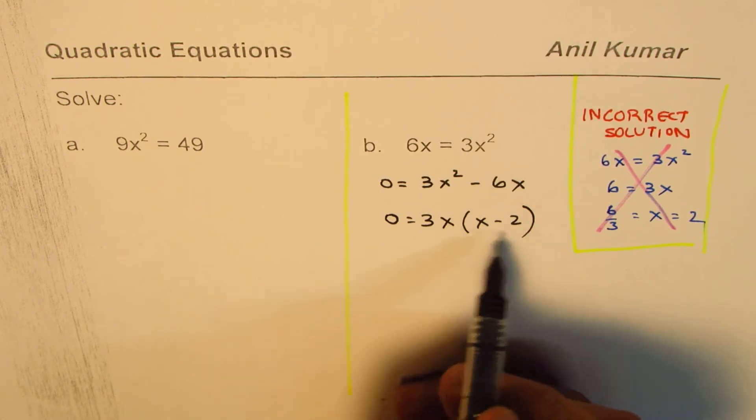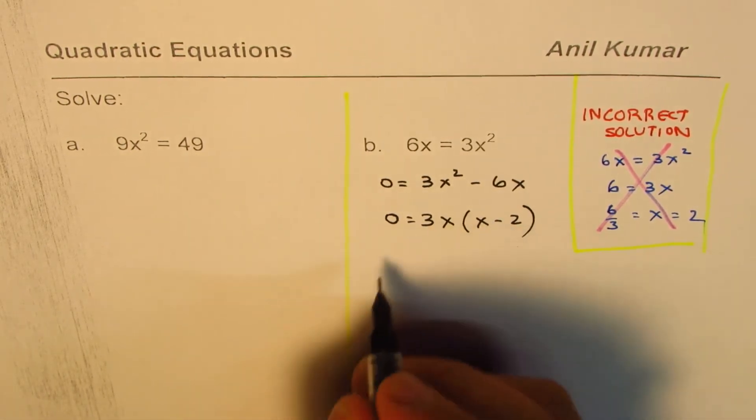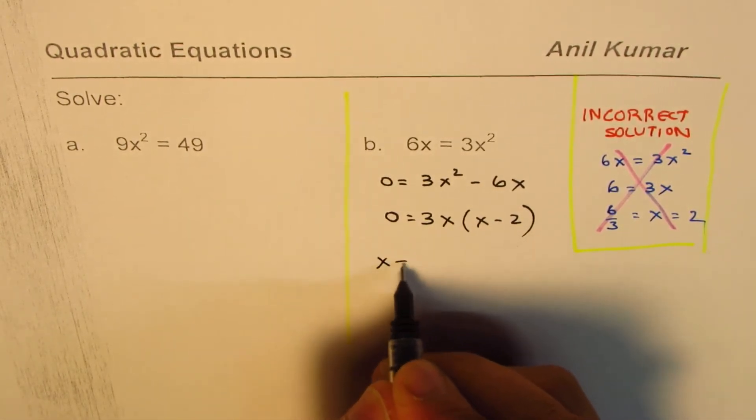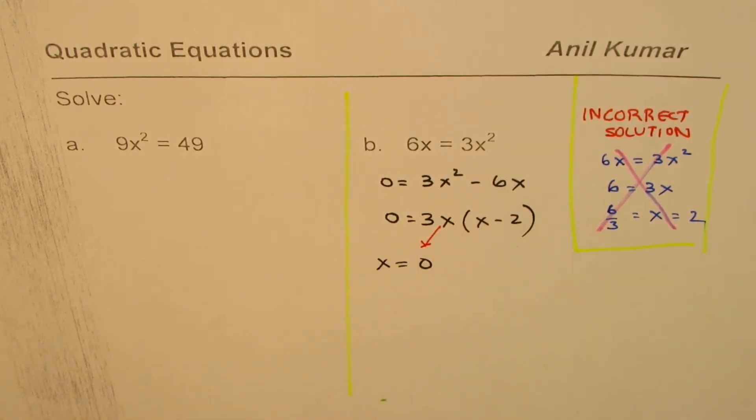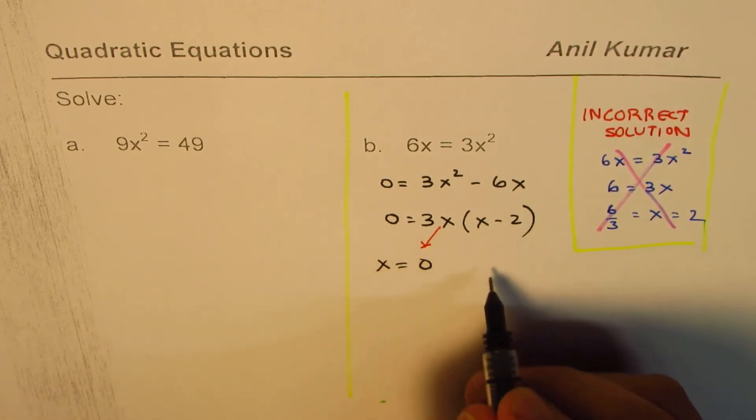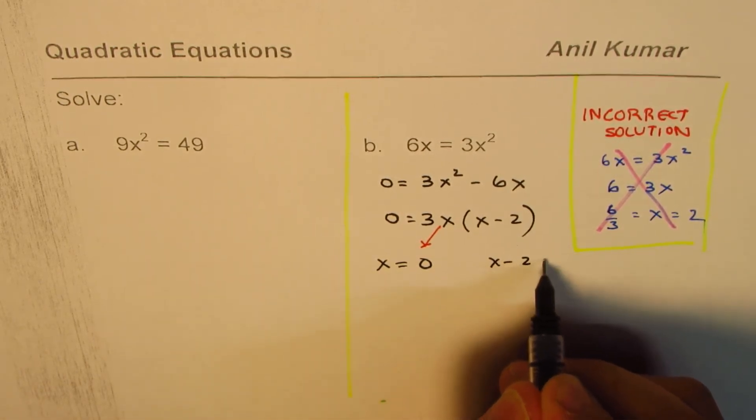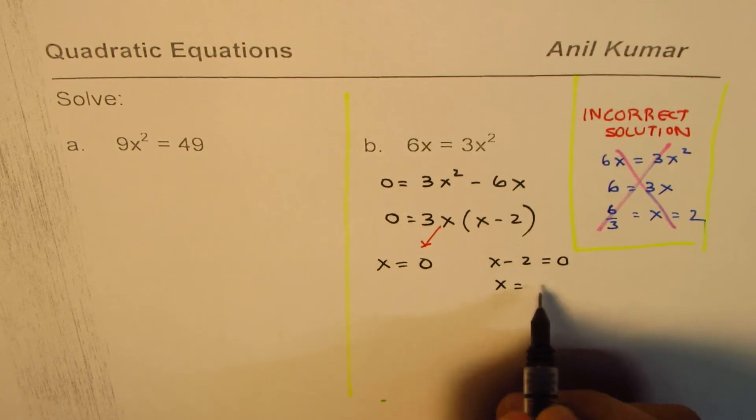So whenever you have a factored form, it's kind of easy to write down the solution. One of the solutions is x equals to 0, that makes the first factor 0. The other one is x minus 2 equals to 0, that is x equals to 2.